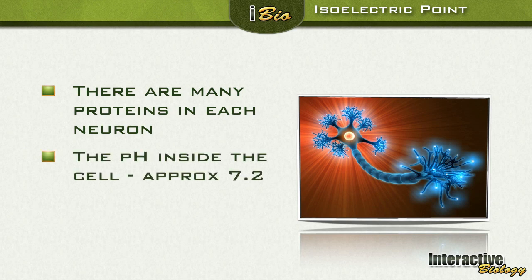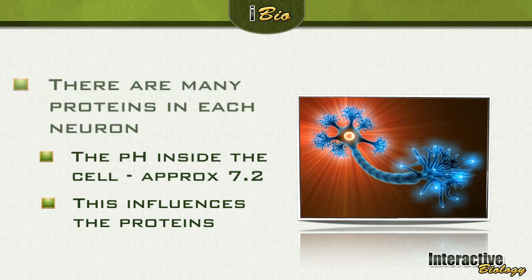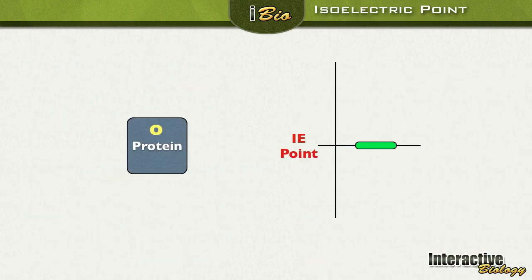The pH inside the cell is approximately 7.2. Now you remember the numbers before — between 4.5 and 4.7 would be the isoelectric point. And what we'll see is that this is going to influence the proteins. How exactly is it going to influence the proteins? Well let's look right at that.